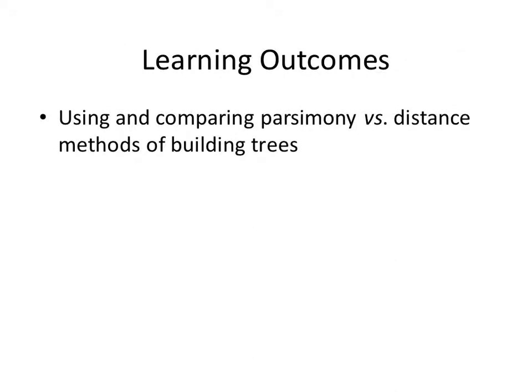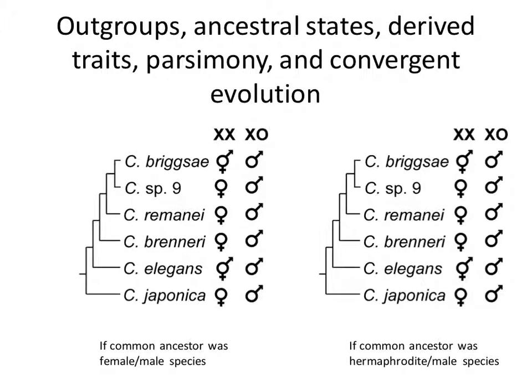I wanted to start out reminding you, which you probably don't need reminding, but what we're talking about right now is how to build phylogenetic trees — what sort of data do we use and how do we actually construct the tree from data that scientists have. Last time we started working with some parsimony trees and some distance trees. Most of today is about practicing making distance trees, since that was less than clear last time. I also didn't do a perfectly adequate job of summarizing the results of the changes we made to those two trees and defining all the vocabulary.